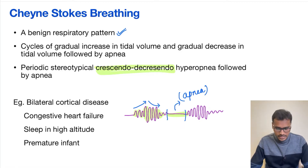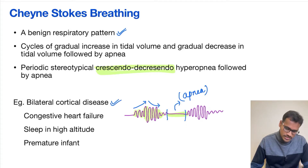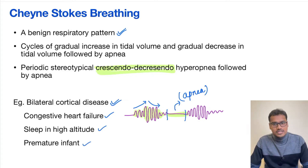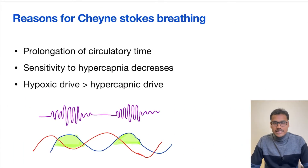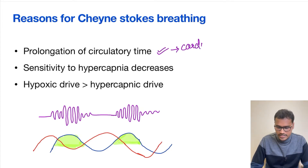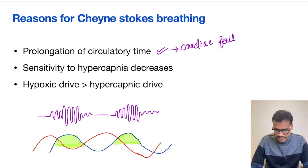This classical pattern of respiration is called Cheyne-Stokes breathing. It can happen in various disorders like bilateral cortical lesions, congestive heart failure, when a person is sleeping at high altitude, and in premature infants. This pattern can be beautifully explained by the prolongation of circulatory time, especially in cases of cardiac failure or circulatory delay.